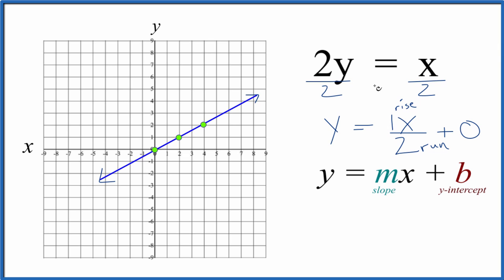You could put values in for y and get values for x, come up with a table of values, and you'd end up graphing the same line. Either way, this is the graph for 2y equals x, and this is Dr. B. Thanks for watching.